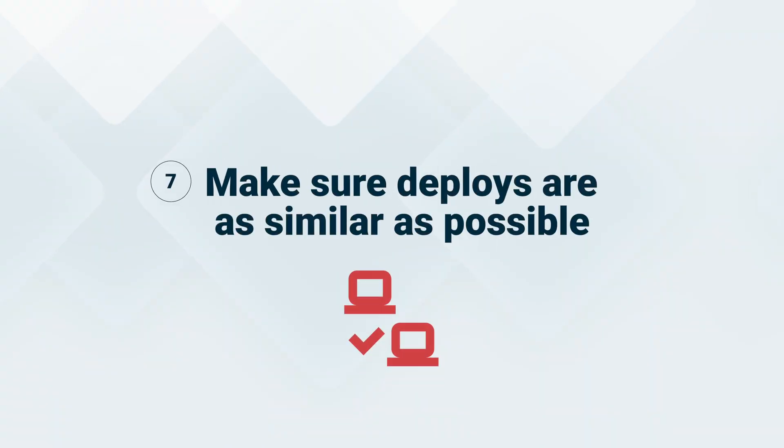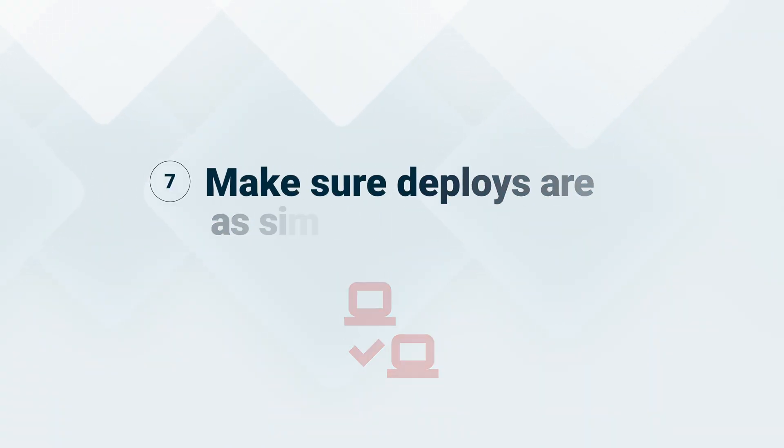The final point is that you need to make sure your development, staging, and production setups are as similar as possible. Nowadays we have lots of tools to help achieve that. Docker, for example, not only allows you to run services in the cloud — you can also run it on your local development machine. That way your execution environment is the same for local development, staging, testing, and production. This means when you take your app from local development to a development server, you'll run into fewer surprises because the environments are so similar.